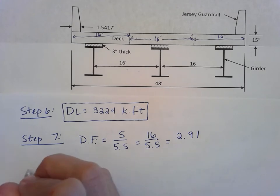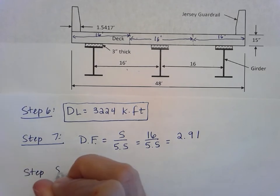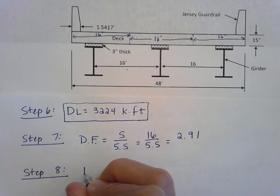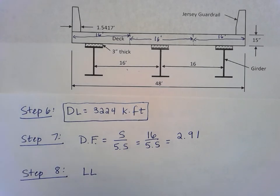Step eight is going to be to find that live load information. Remember, we have a table for our live load that we're going to use that's based on that HS20-44 AASHTO truck loading. That's already been solved for you, so you can look that up. Our span length here is 80 feet.